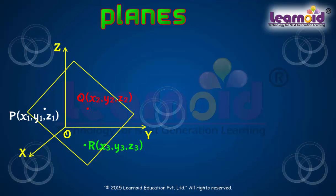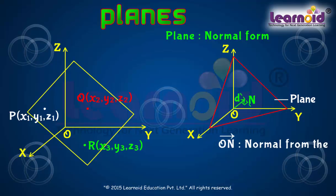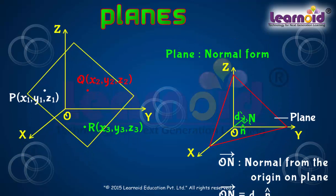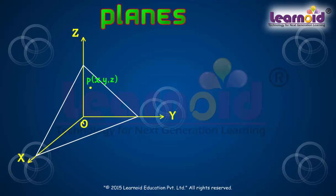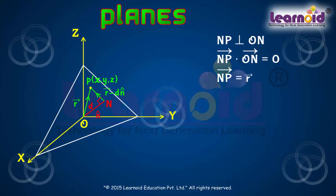Now let us find vector and Cartesian equations of the planes. First is the equation of a plane in normal form. Consider a plane whose perpendicular distance from the origin is D. ON vector is the normal vector from origin to the plane. N-cap is the unit normal vector along ON vector. Then ON vector is equal to D into N-cap. Let P be any point on the plane whose position vector is R. NP is perpendicular to ON.